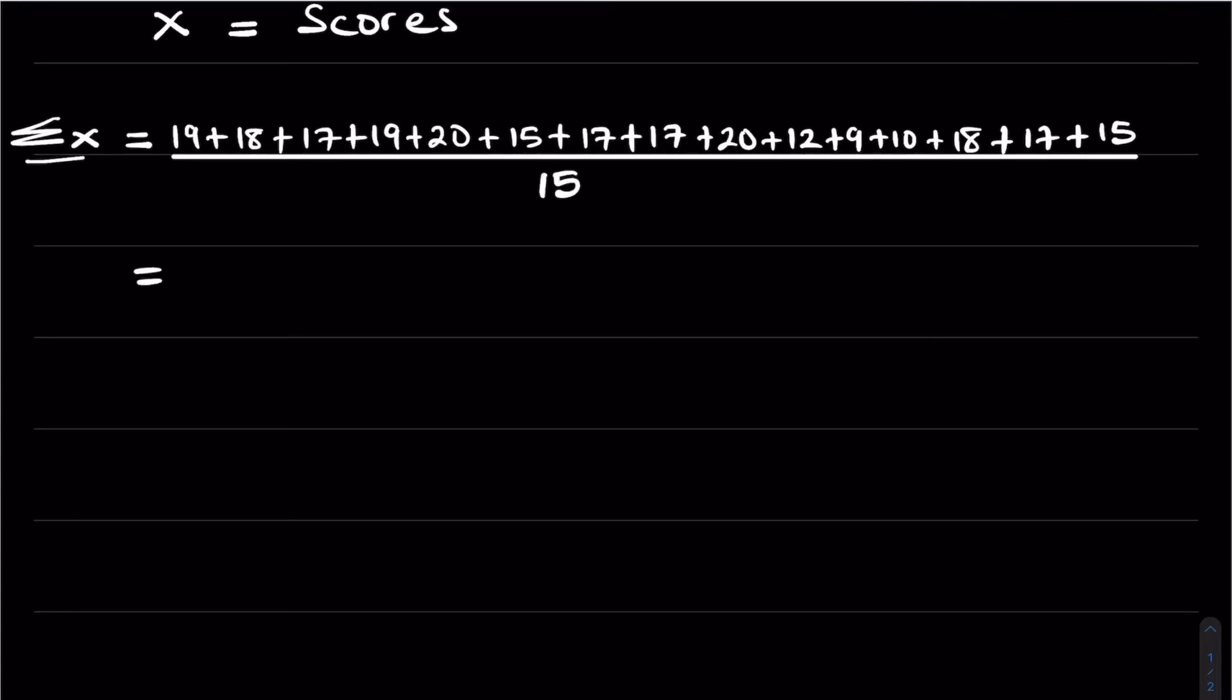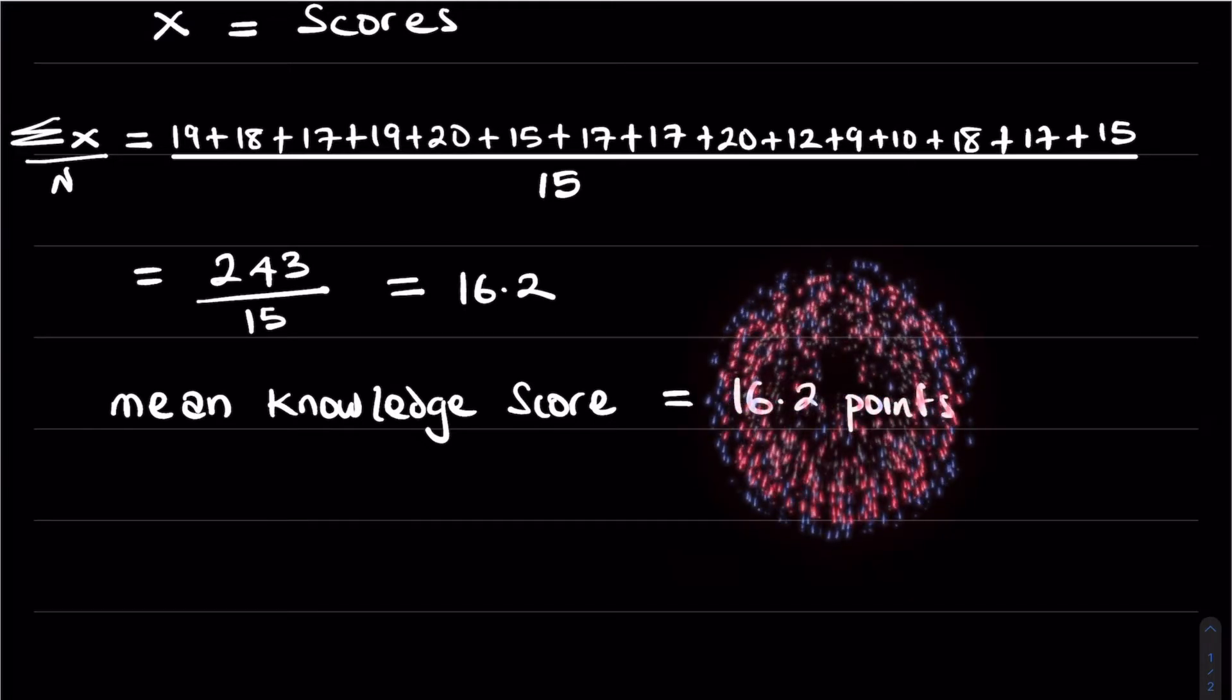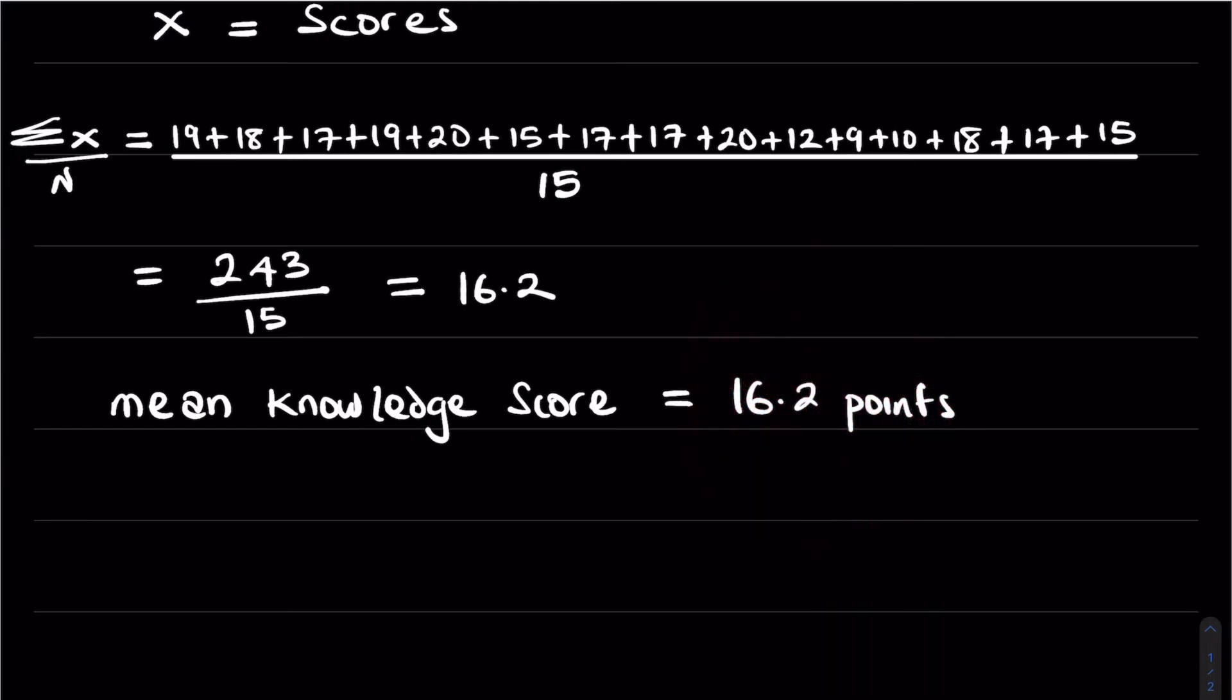And when we add this up, we get 243. And then divided by 15 will give us a score of 16.2 points. So the mean knowledge score is 16.2 points. So we've answered the first part of the question. Easy peasy.